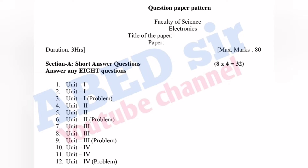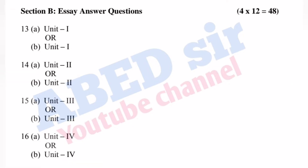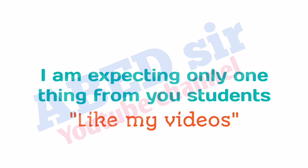In Part B, mutual choice questions are there. Total 4 questions will be asked and you have to answer all 4. Each one carries 12 marks, so 4 times 12 gives 48 marks from Part B. Total, it is an 80 marks paper for the semester exam. I hope you understand.